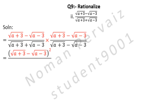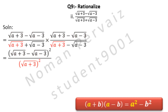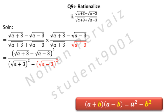Under root A plus 3, minus under root A minus 3, is multiplied with under root A plus 3 minus under root A minus 3, whole square. Divided by: here we are going to apply the formula given below, which is (A + B)(A - B) = A squared minus B squared. In our question, A is under root A plus 3, and B is under root A minus 3. So by applying the formula, under root A plus 3 whole square is written, minus comes from the formula. We have to write B squared: B is under root A minus 3, so we write under root A minus 3, whole square.